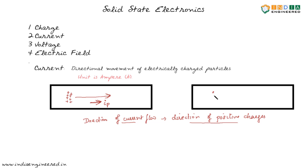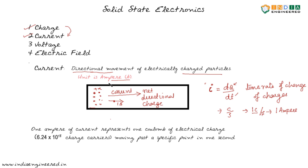What if we had a lot of negative charges moving in this direction? We have defined current flow in terms of positive charges, so we can assume that negative charge motion in this direction corresponds to positive charge motion in the opposite direction. Therefore, the current flow will be in the direction opposite to the motion of negative charged particles. So current is simply the net directional movement of charged particles, and we can find the relationship between current and charges as I equals dQ/dt — the time rate of change of charges.